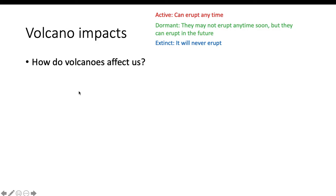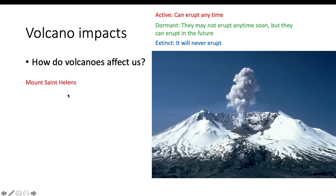The first one I want to talk about is Mount St. Helens. It erupted in 1980 and caused a massive eruption. It didn't kill too many people, but it badly damaged the nature around it — the forests were burnt and lots of bad things happened to the wildlife. Mount St. Helens is still active, which means it can erupt at any time.